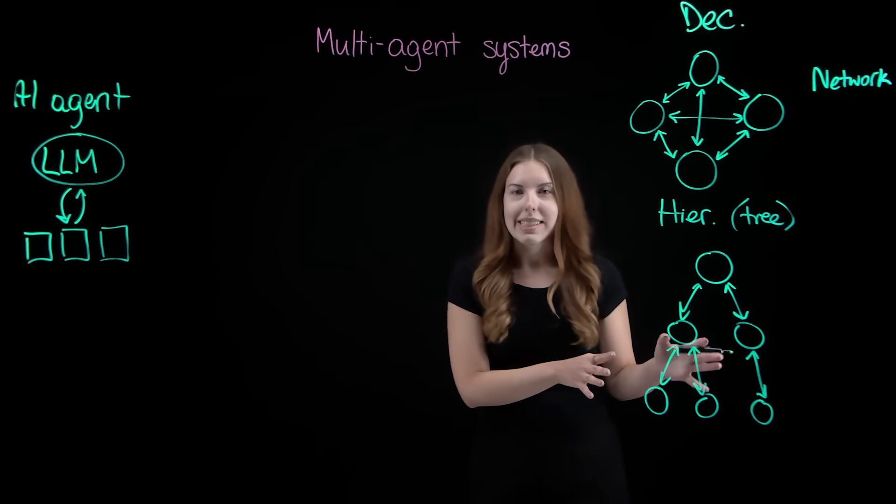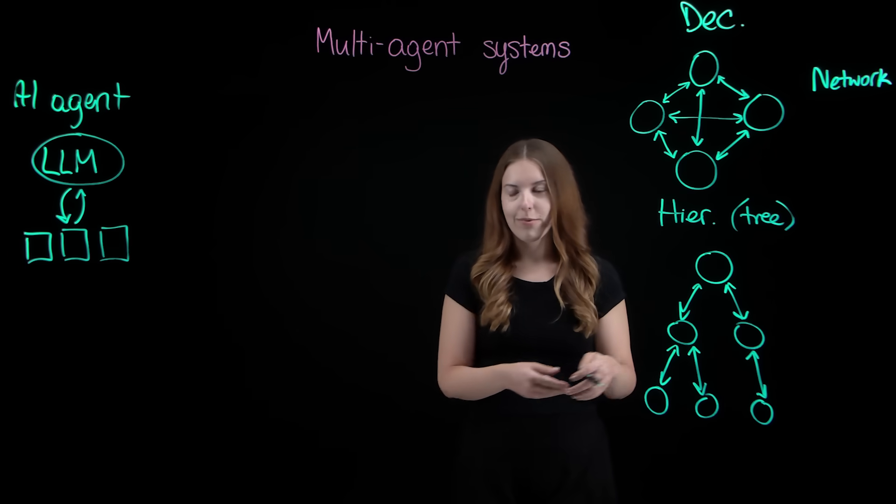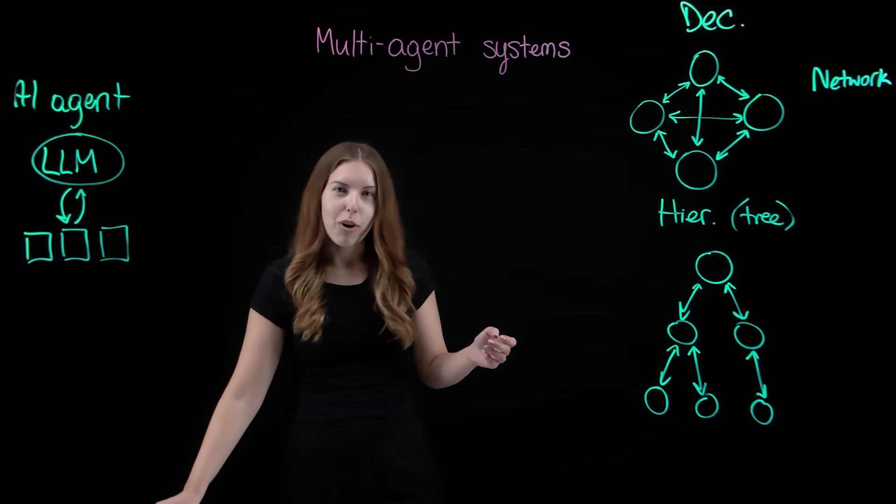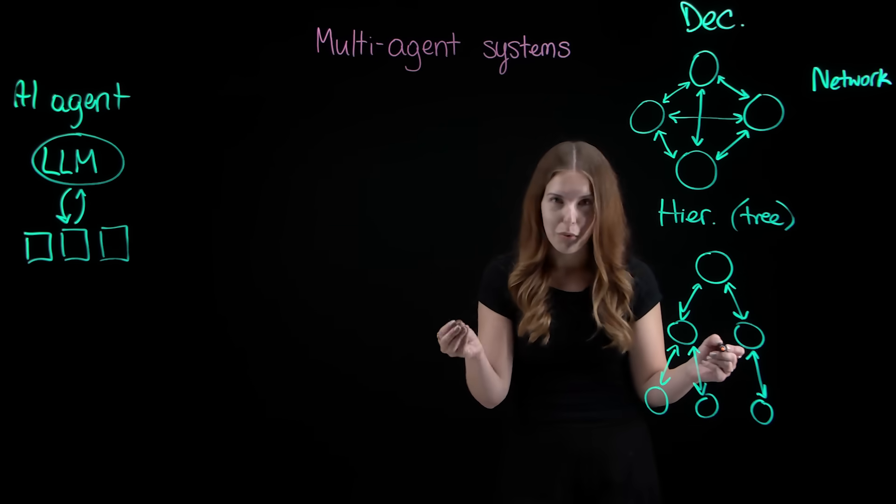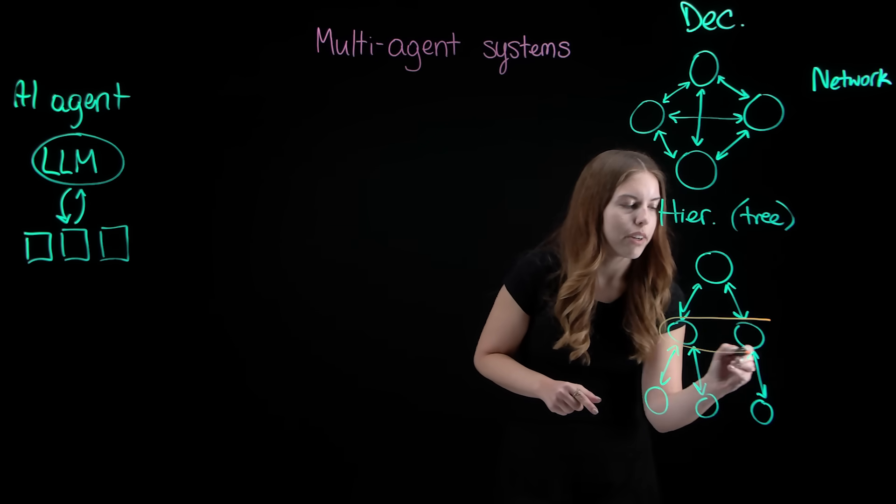There are many ways to distribute the authority here. For example, in uniform hierarchical structures, all agents at the same level play the same role and have the same authority.